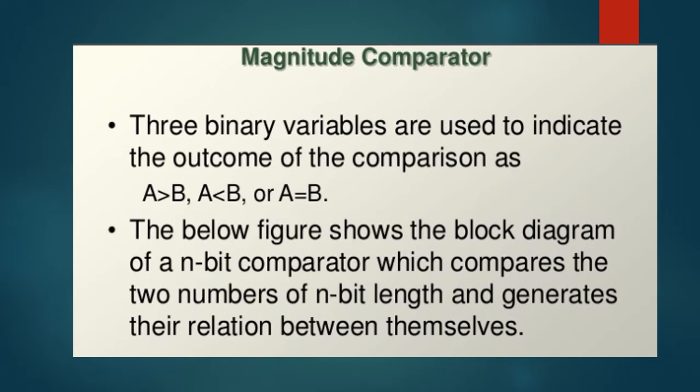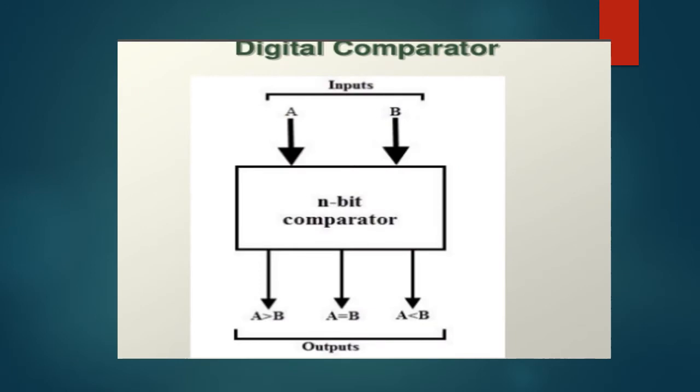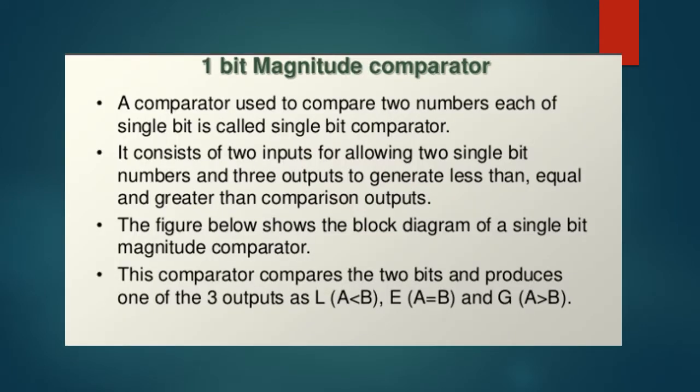The below figure shows the block diagram of an n-bit comparator which compares two numbers of n-bit length and generates their relation between themselves. Usually, we have 1-bit magnitude comparator, 2-bit magnitude comparator and 4-bit magnitude comparators. A comparator used to compare two numbers each of single-bit is called a single-bit comparator. It consists of two inputs for allowing two single-bit numbers and three outputs to generate less than, equal and greater than comparison outputs.